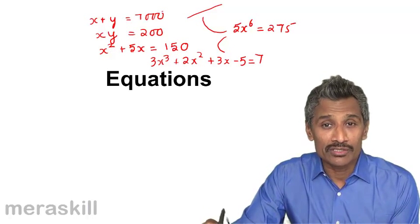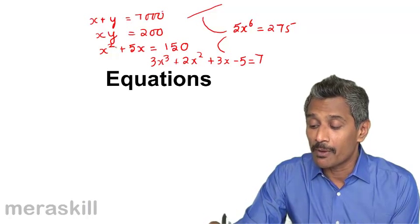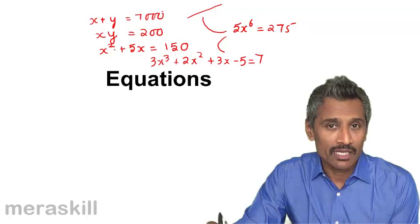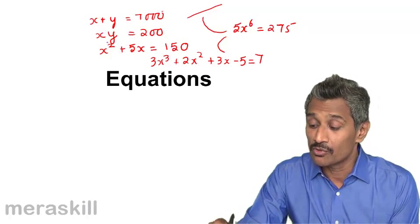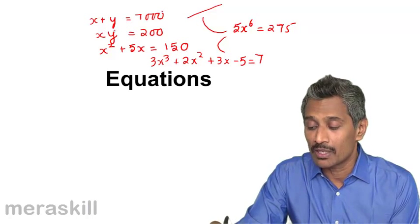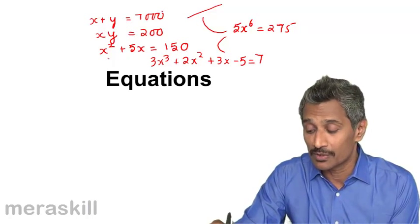Now generally, the number of solutions to a particular equation depends upon the maximum power to which the unknown is raised, the unknown which we call as a variable. So for example, here, the total power of x and y put together is 1 plus 1, 2. So there will be two solutions for this.